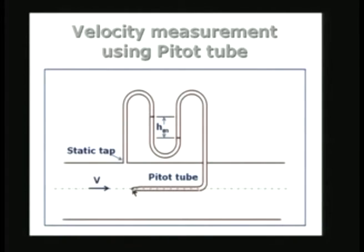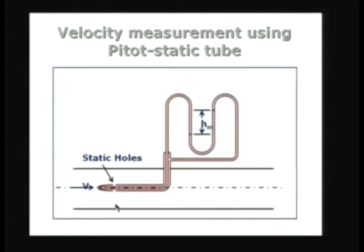This is the pitot tube with a static tap on the wall and the stagnation hole connected to the other side of the manometer. In the case of the pitot-static tube, both the static tap and the stagnation hole are combined on the same probe — the static holes on the annulus portion and the stagnation hole at the front.